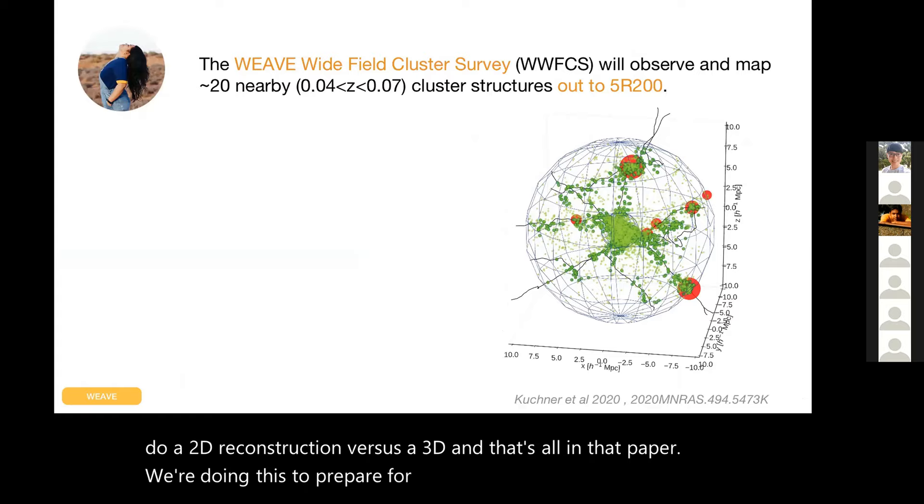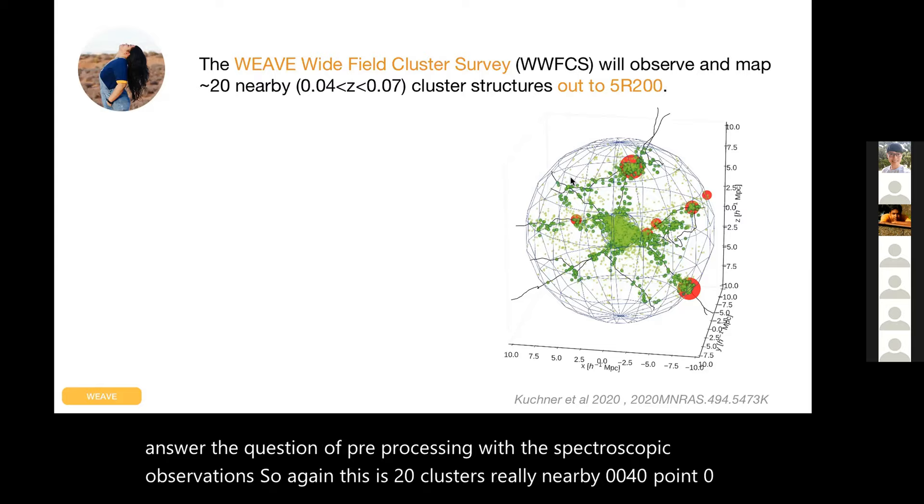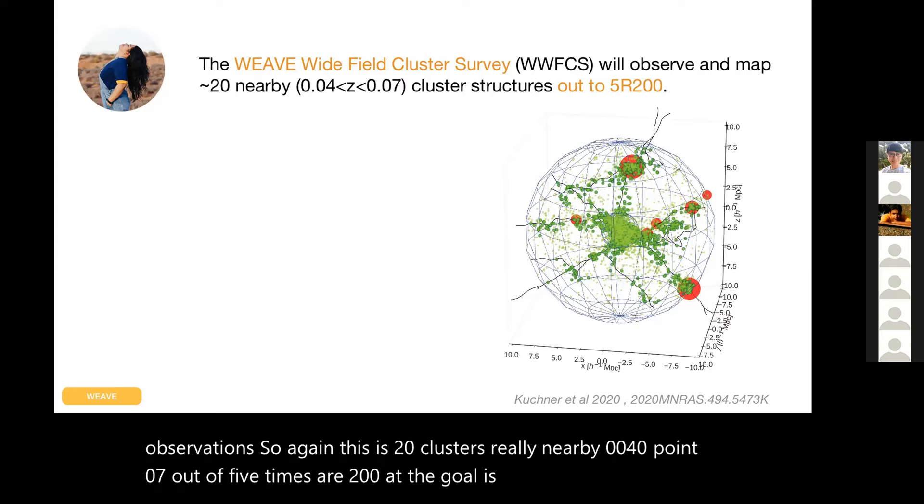We're doing this to prepare for the spectroscopic survey, the WEAVE Wide Field Cluster Survey, where we will then be able to answer the question of pre-processing with the spectroscopic observations. So again, this is 20 clusters really nearby, 0.04 to 0.07 redshift, out to five times R200. The goal is to map this region, see how many are in groups, how many are in filaments, where is this transformation from star forming to quenched, where it becomes a quiescent galaxy. What makes a cluster galaxy, where does that happen.